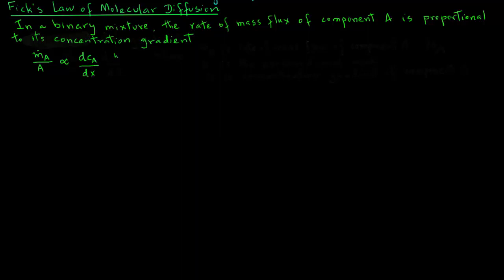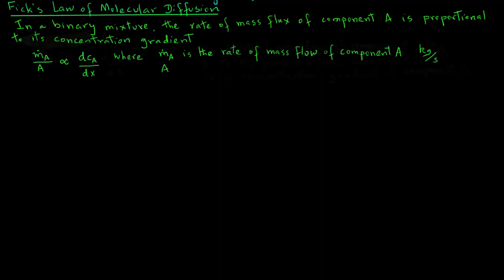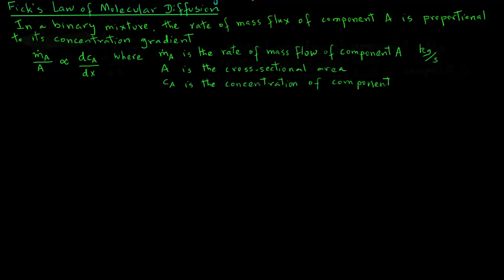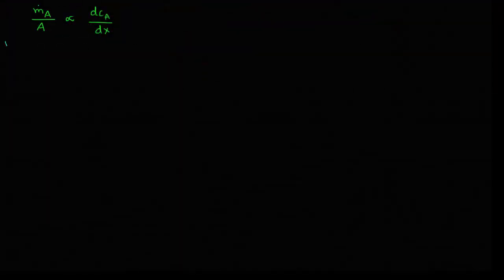Let's see what these terms mean. M_dot_A is the rate of mass flow of component A, and we will use the units kilograms per second. A is the cross-sectional area in square meters, CA is the concentration of the component in kilograms per cubic meter, and X is the distance, or the space coordinate.